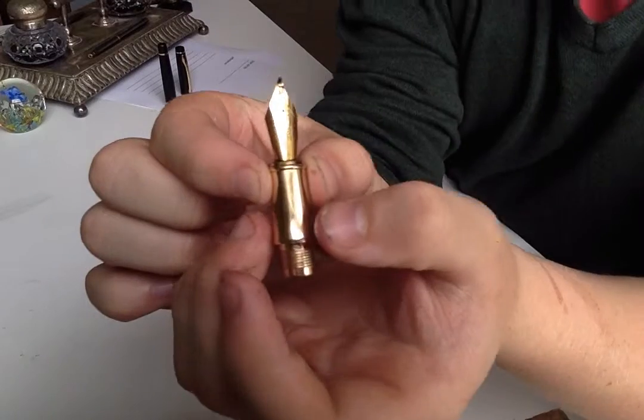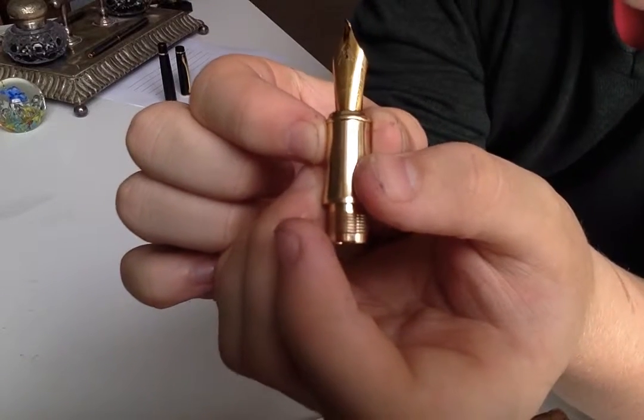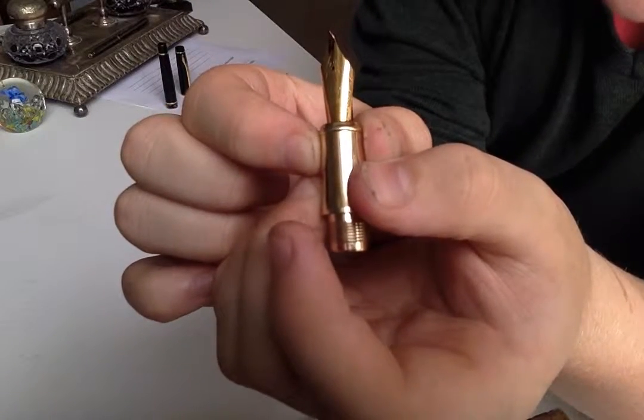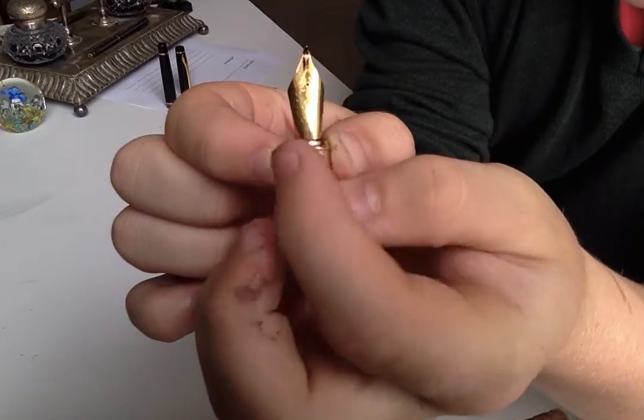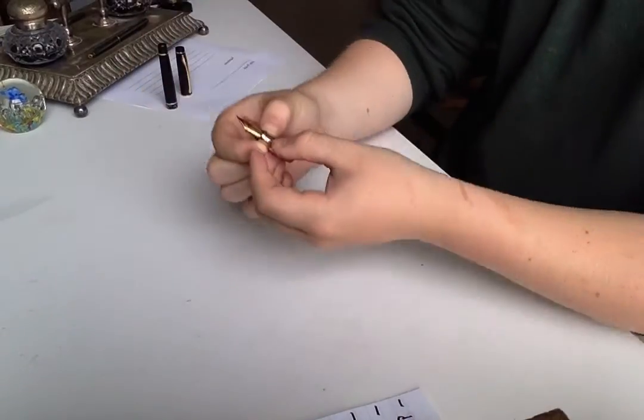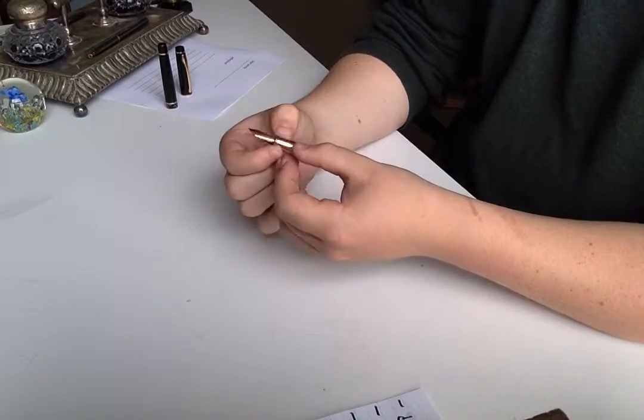Also on the nib you might not be able to see it, you probably won't because of the natural light. There is the Hero logo there and beneath it is Hero. There's also some slight swirl designs, and that's about everything for the nib and the section.